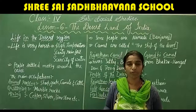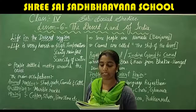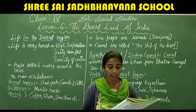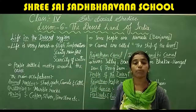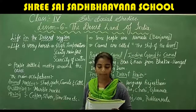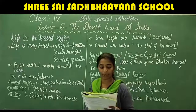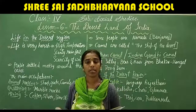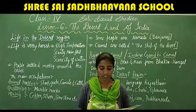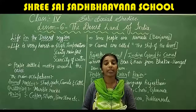The Dilwara temples built by Jains and Mount Abu are world-famous tourist centres in this desert region. Marbles and sandstones of Rajasthan are precious, and the quarried materials are exported to other countries as well as traded within India.